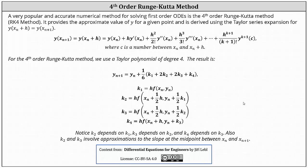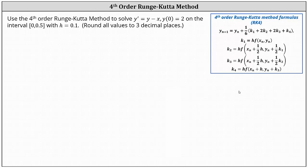Let's take a look at an example. We're asked to use the fourth-order Runge-Kutta method to solve y prime equals y minus x with initial condition y of 0 equals 2 on the closed interval from 0 to 0.5 with h equals 0.1, and we're told to round all values to three decimal places.